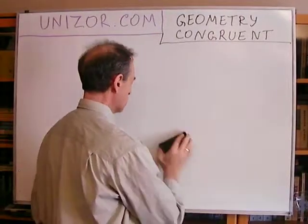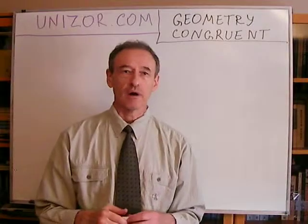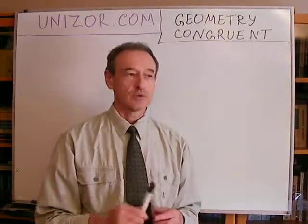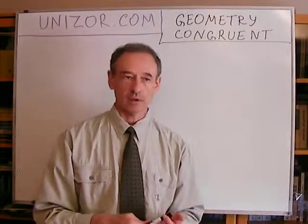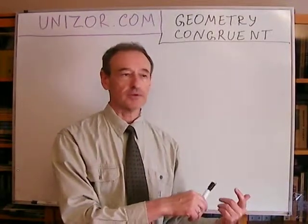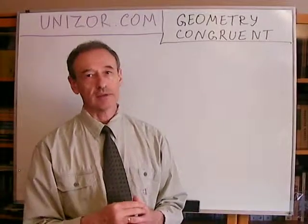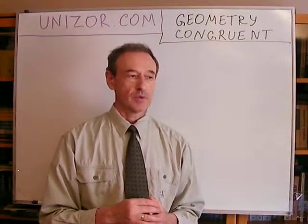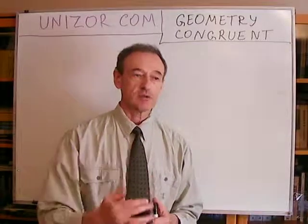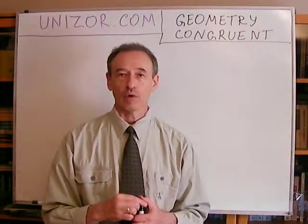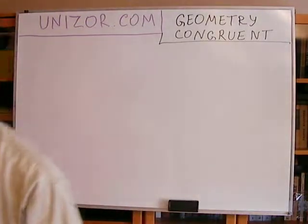To summarize the definition of congruency: two geometrical figures are congruent if there is a non-deforming transformation — which can be a combination of parallel shift, rotation, and reflection — that turns one geometrical figure into another position that completely coincides, point by point, with the other geometrical figure. That concludes this introduction to the concept of congruence. This is just an introduction to the terminology and explanation of what congruent figures are about. Thank you very much.